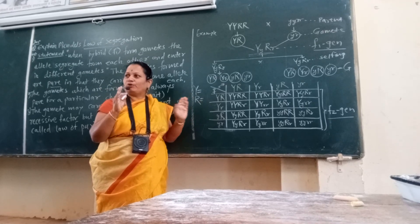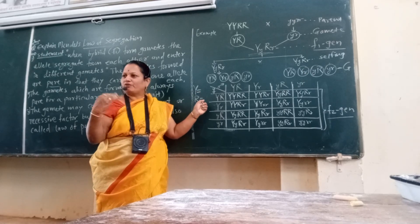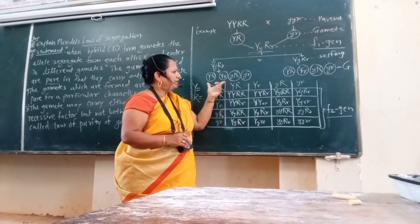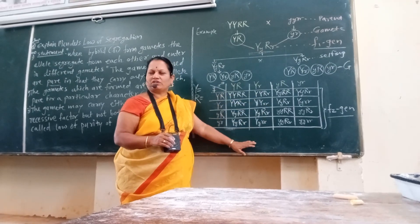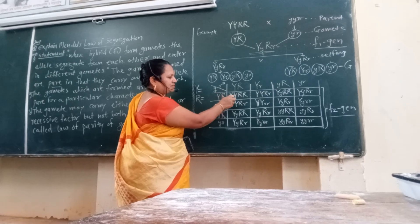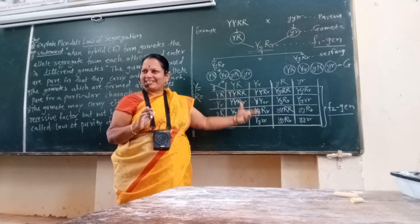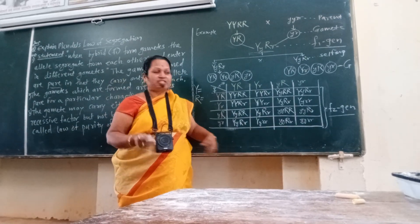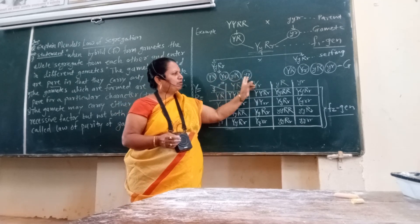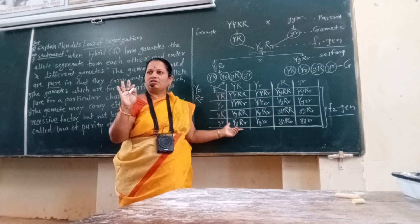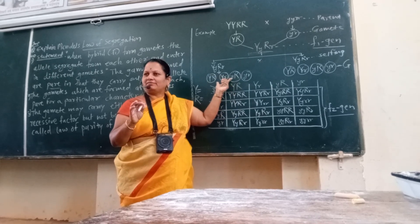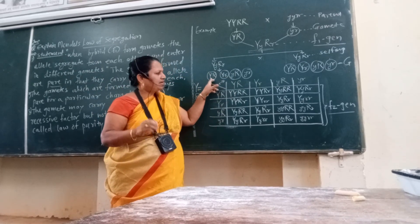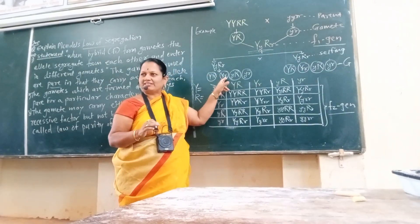Because there is no mixing, they express themselves in pure form. Therefore, this law is also called the law of purity of gametes. These four gametes from the male plant and the female plant's gametes give sixteen combinations in the dihybrid cross. Capital Y combines with capital R and also with small r — that is independent assortment.